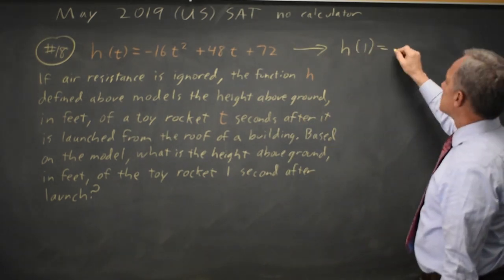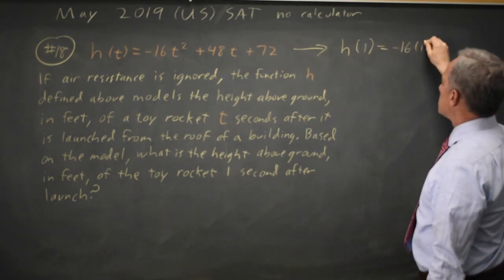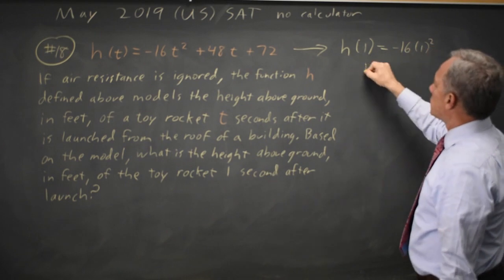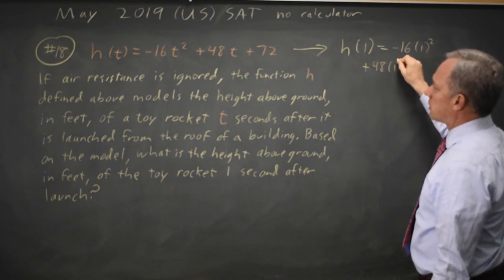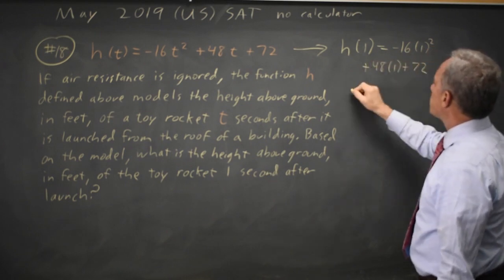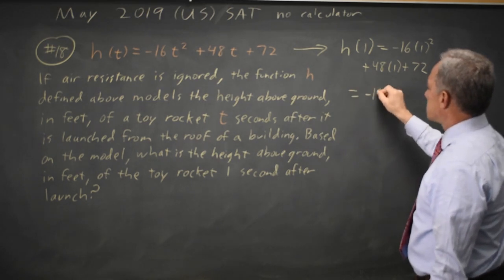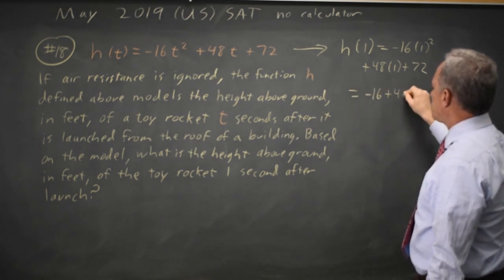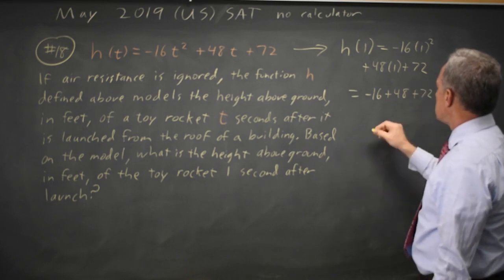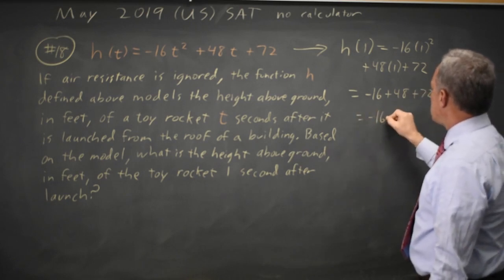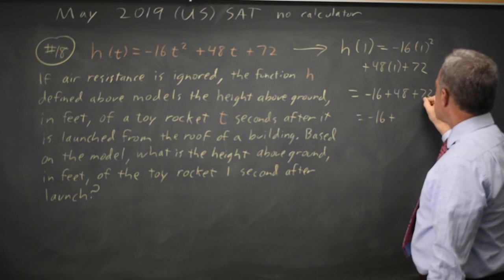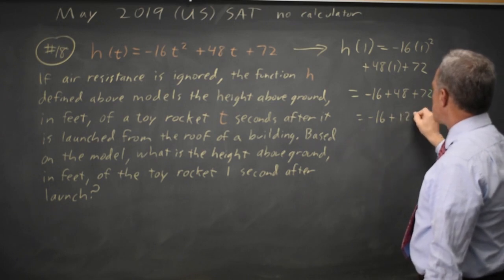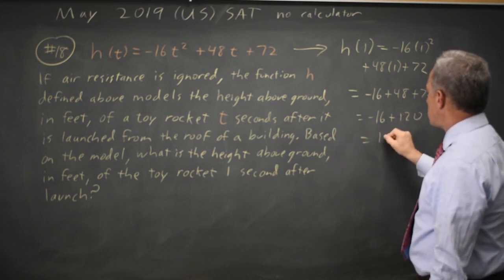So H of one is negative 16 times one squared plus 48 times one plus 72, which is negative 16 times one is negative 16 plus 48 plus 72. Negative 16 plus 48 plus 72 is 120, which is 104.